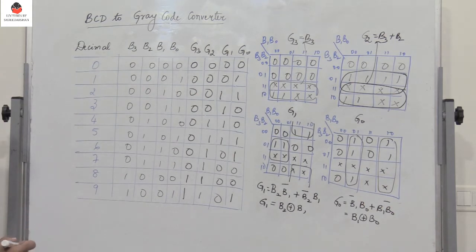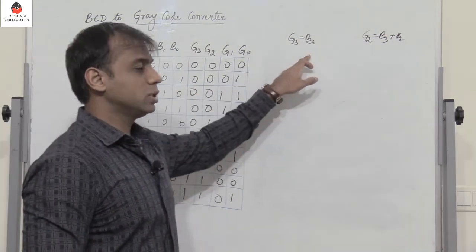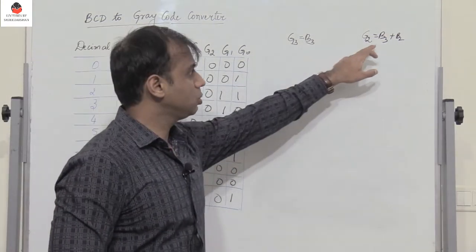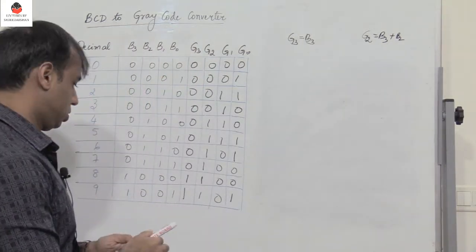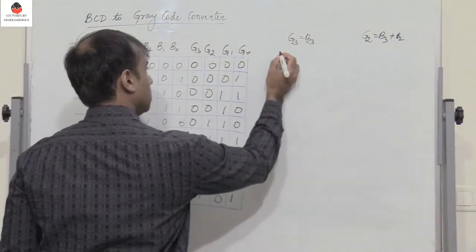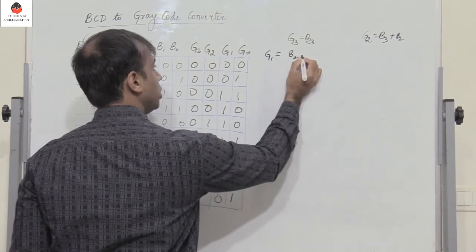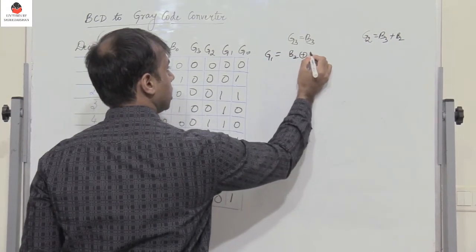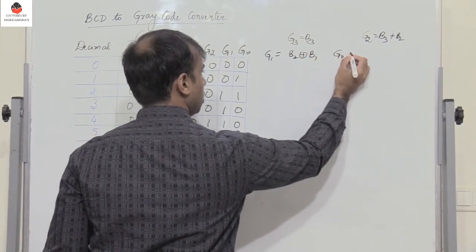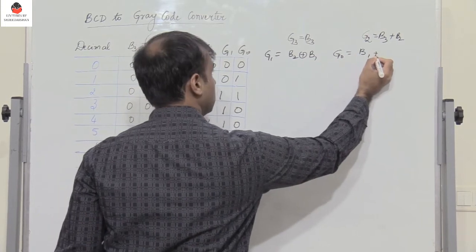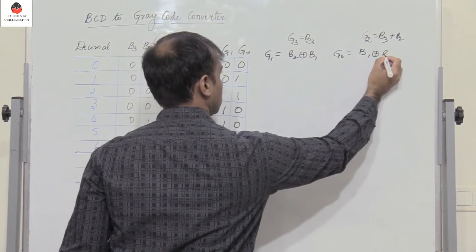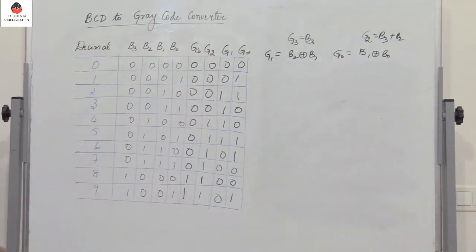So we have all four expressions. Let me list them: G3 = B3; G2 = B3 OR B2; G1 = B2 XOR B1; G0 = B1 XOR B0. Now we need to implement G3, G2, G1, and G0 using logic gates.